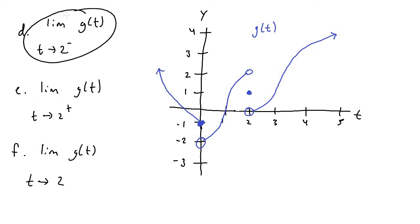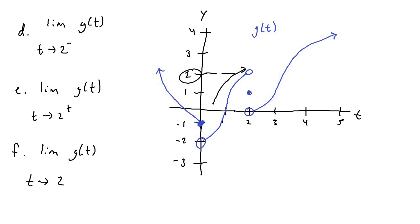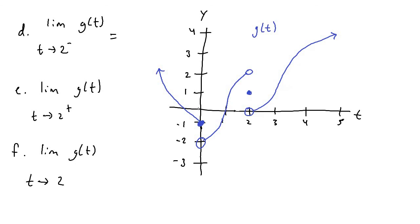For the limit of g of t as t approaches two from the left-hand side: approaching the t value of two from the left, the limit is two. For the next part, the limit of g of t as t approaches two from the right-hand side: approaching two from the right, the y value is zero, so the limit equals zero. For the overall limit of g of t as t approaches two, since the left-hand limit of two and the right-hand limit of zero are not equal, the limit does not exist.